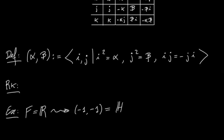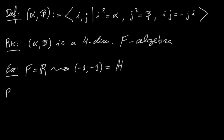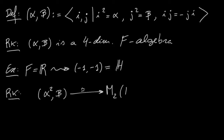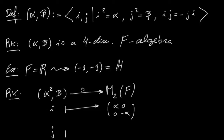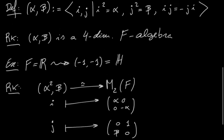What can we say about these algebras? First of all, they form a four-dimensional F-algebra with some interesting properties. For example, suppose that one of the invertible elements is a square; in that case the algebra we get is actually the matrix algebra of two-by-two matrices over our base field F. You can see this by sending the generator i to the matrix (alpha, 0; 0, -alpha) and sending the generator j to the matrix (0, 1; beta, 0).